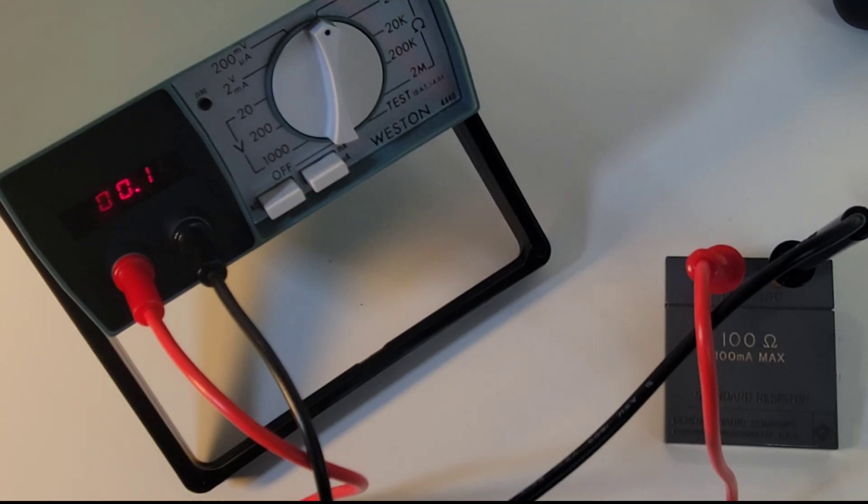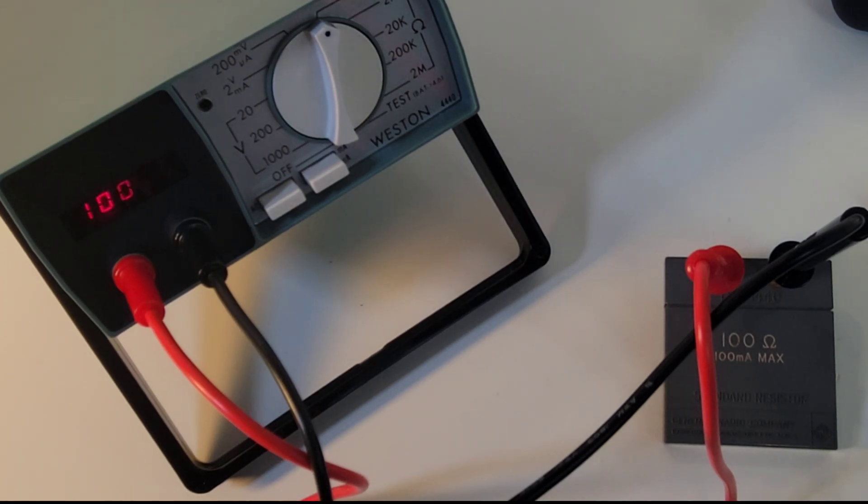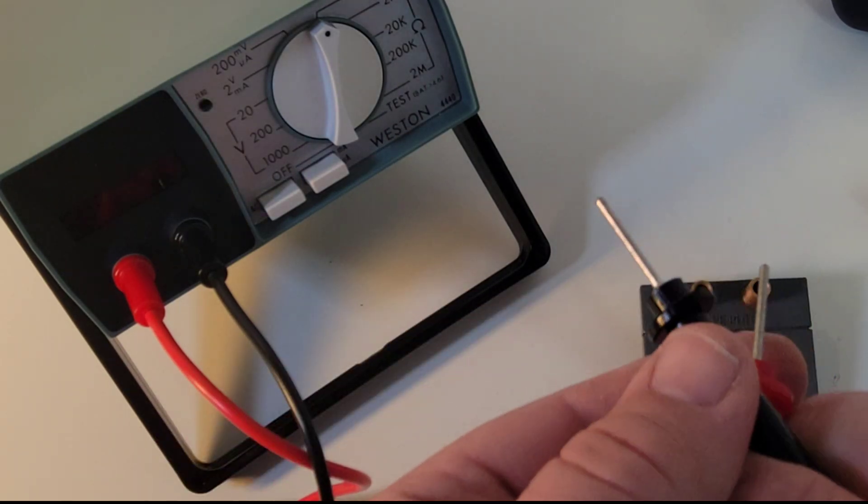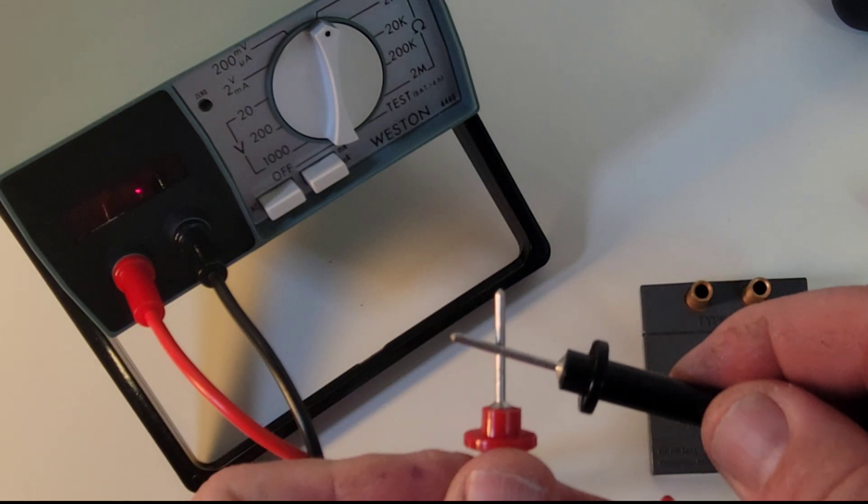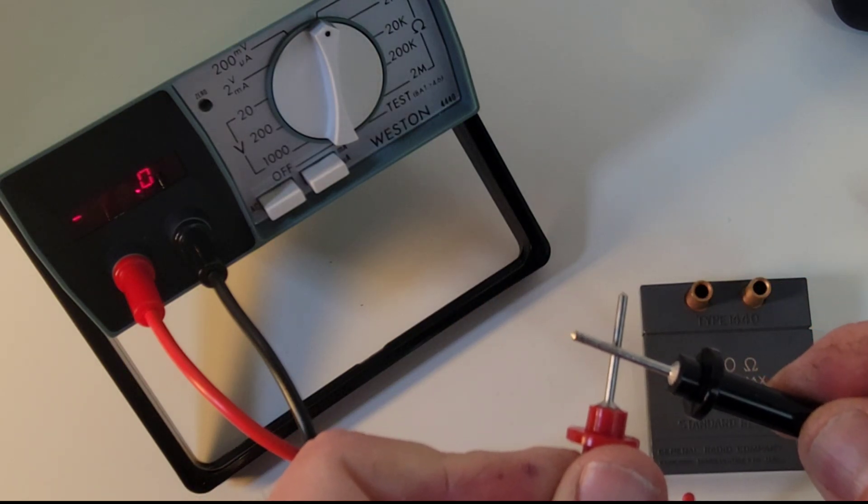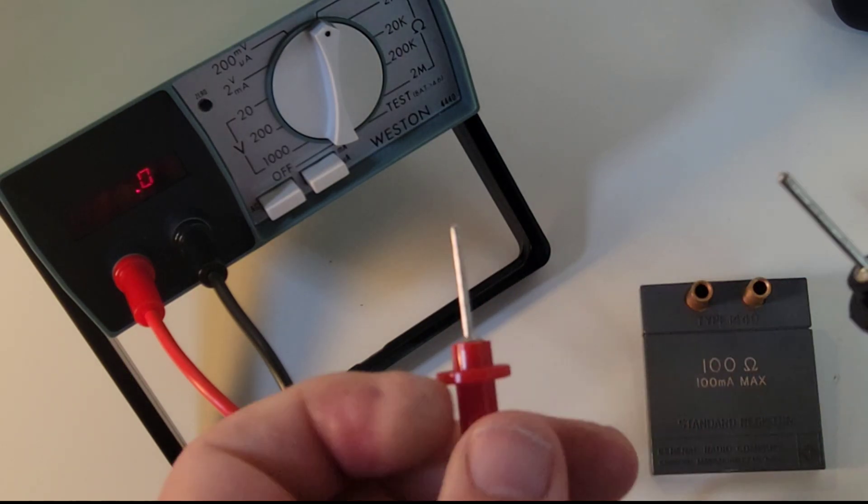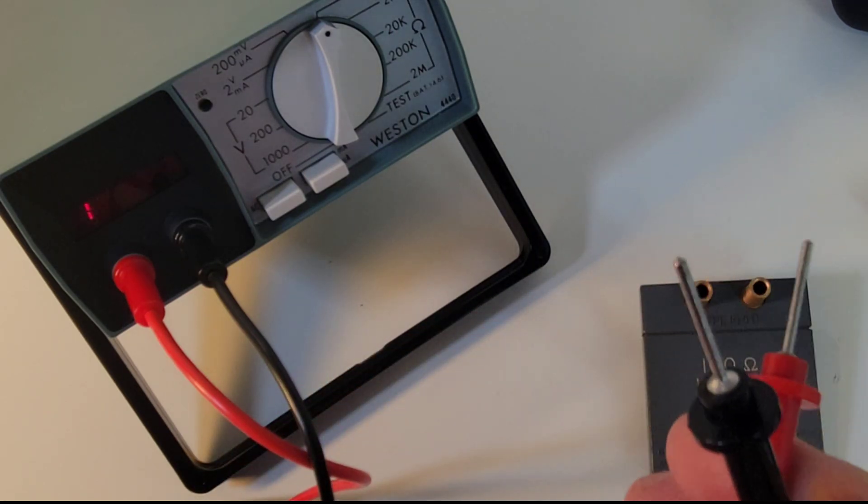Take a little foray into resistance land. Look at that 100 ohm precision resistor. 100.1 coming up on the Weston. If we put these test leads together, absolutely no resistance on the test leads. Amazing. Good stuff.